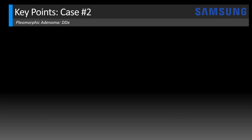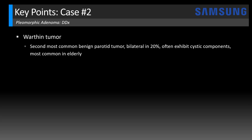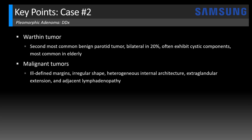Briefly touching on the differential diagnosis for pleomorphic adenoma in the parotid gland: the most common to be aware of is Warthin tumor, the second most common benign parotid tumor. These occur almost exclusively in the parotid gland, can be bilateral in 20%, and often have a cystic component while maintaining a sharp margin. They're most common in elderly patients, older than those typically seen with pleomorphic adenoma. Malignant parotid tumors often have ill-defined margins and irregular shapes, with extra-glandular extension and morphologically abnormal lymphadenopathy raising suspicion for malignancy.